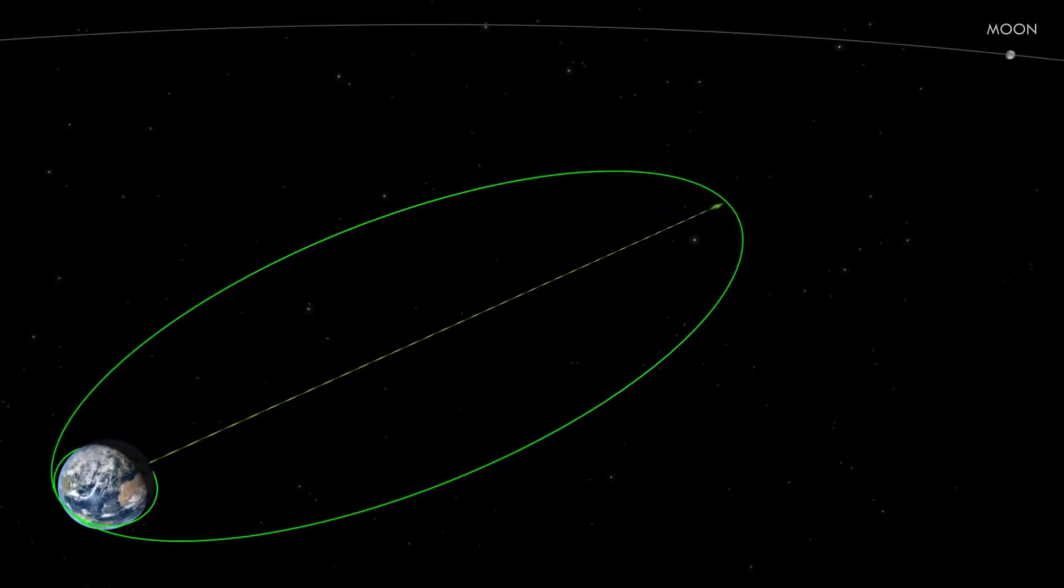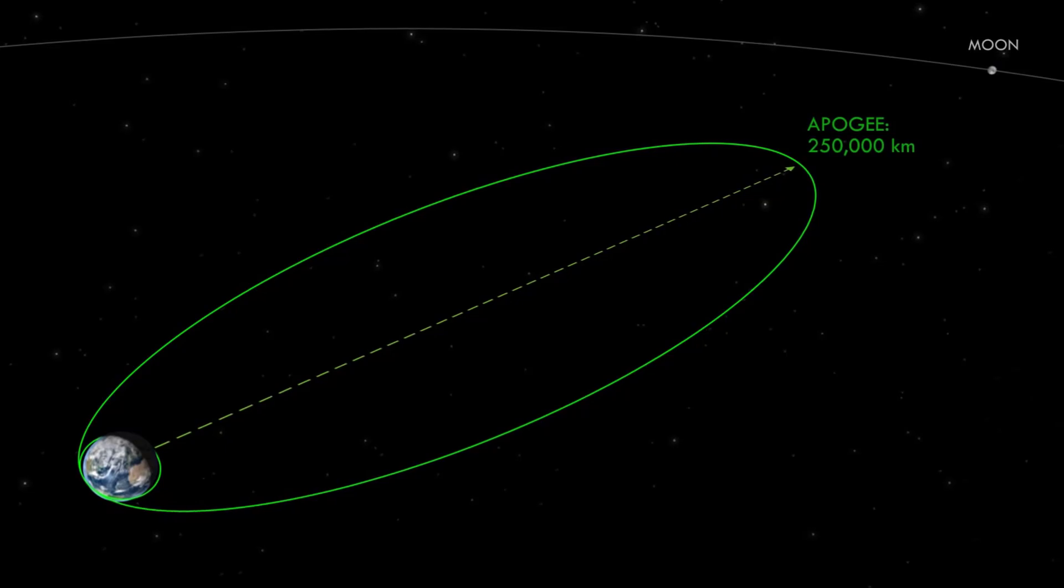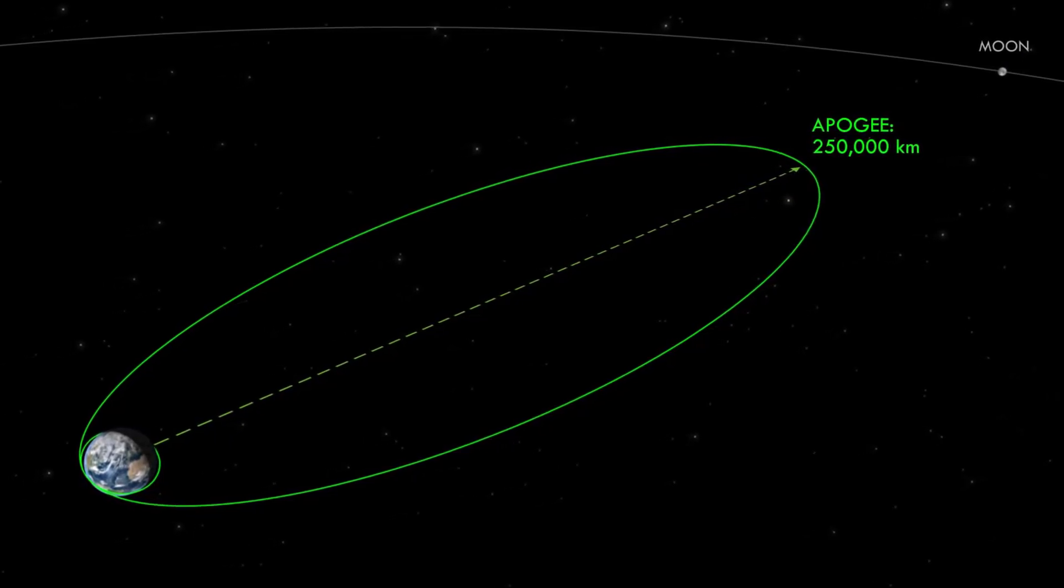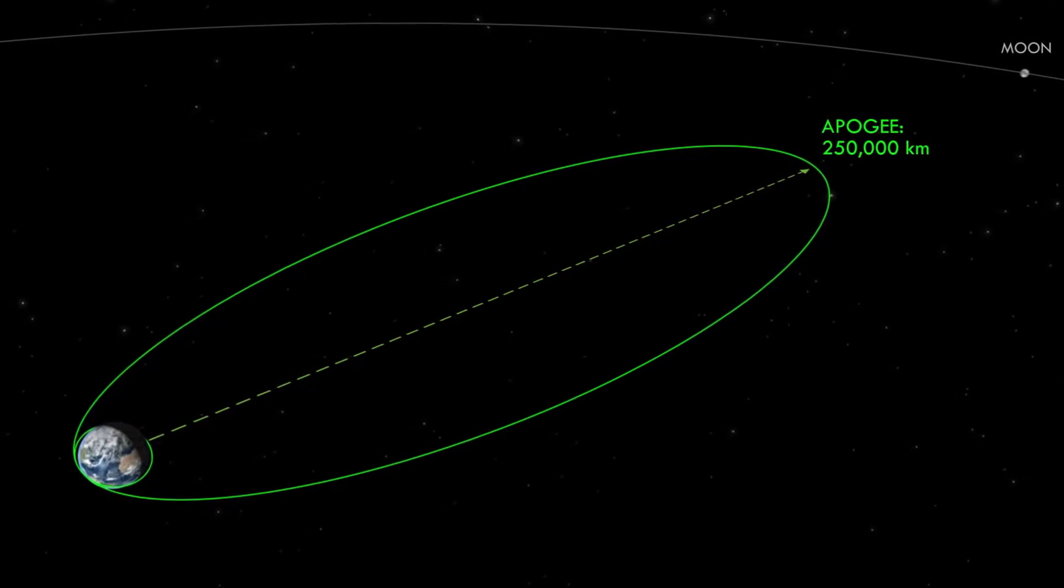At liftoff, SpaceX will be aiming to place TESS into a highly elliptical orbit that is about 200 kilometers from the Earth at its closest approach and extends out over 250,000 kilometers at its apogee, which is about two-thirds of the way to the Moon.